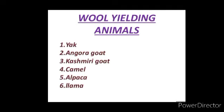Next we are going to know about animals that yield wool — wool yielding animals. Several breeds of sheep are found in different parts of our country. However, the fleece of sheep is not the only source of wool. Though wool commonly available in the market is sheep wool, some other wool yielding animals are yak, angora goat, Kashmiri goat, camel, alpaca, and llama.